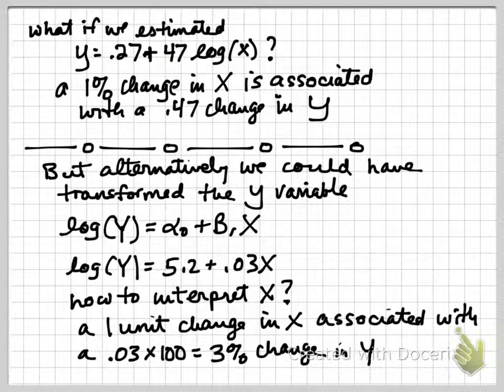What if we estimated and got a different number, y equals 0.27 plus 47 log of x? Well, we would say that a 1% change in x is associated with a 0.47 change in y. That is, a 100% change in x is associated with a 47-unit change in y, or 1% change in x is associated with a 0.47 unit change in y.